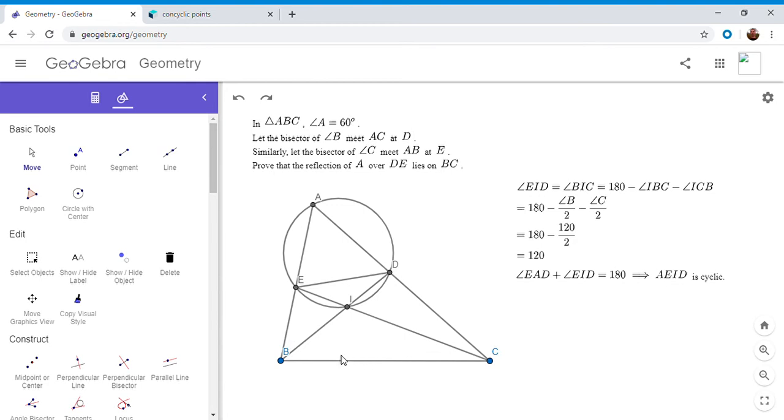We don't know yet that the point F is the reflection of A over DE. We're going to try to work backwards. We're going to draw the circumcircle of ABD and let it cut DC at F, and then we want to show that F is indeed the reflection of A over DE. We don't know yet that it is the reflection; we're going to try to show that. From the argument I just said, we know that AD equals DF.